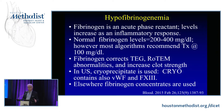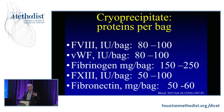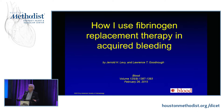Blood bankers are sometimes reluctant to give cryo if they're not bought into normalizing fibrinogen. When you give cryo, usually 5 to 10 units, you're giving about 2 grams of fibrinogen — which is what you give with fibrinogen concentrates. Tim Goodenow and I published in the American Society of Hematology our review on how I use fibrinogen in acquired bleeding.